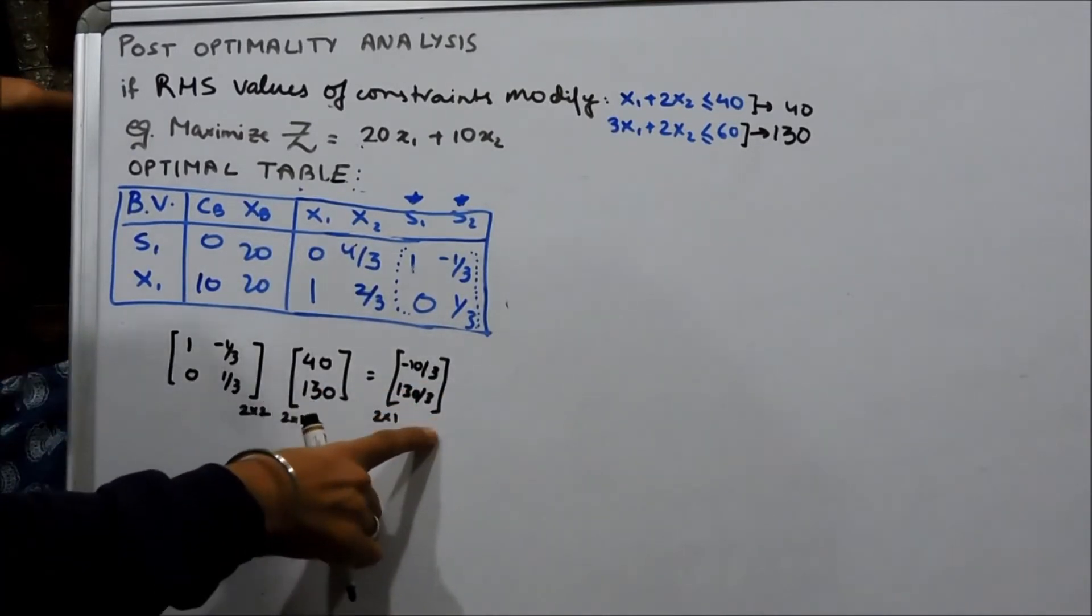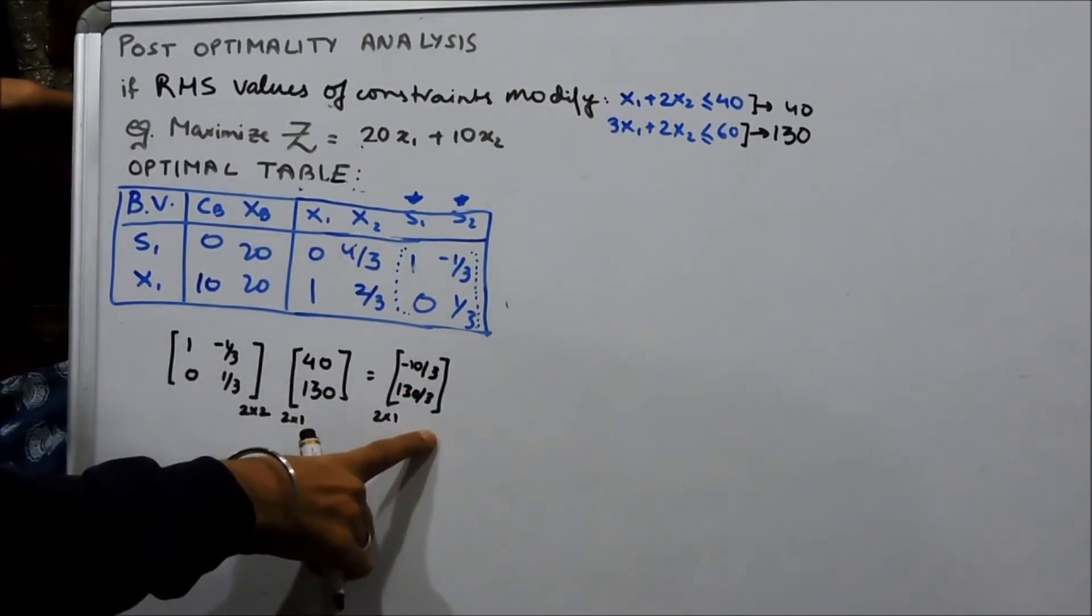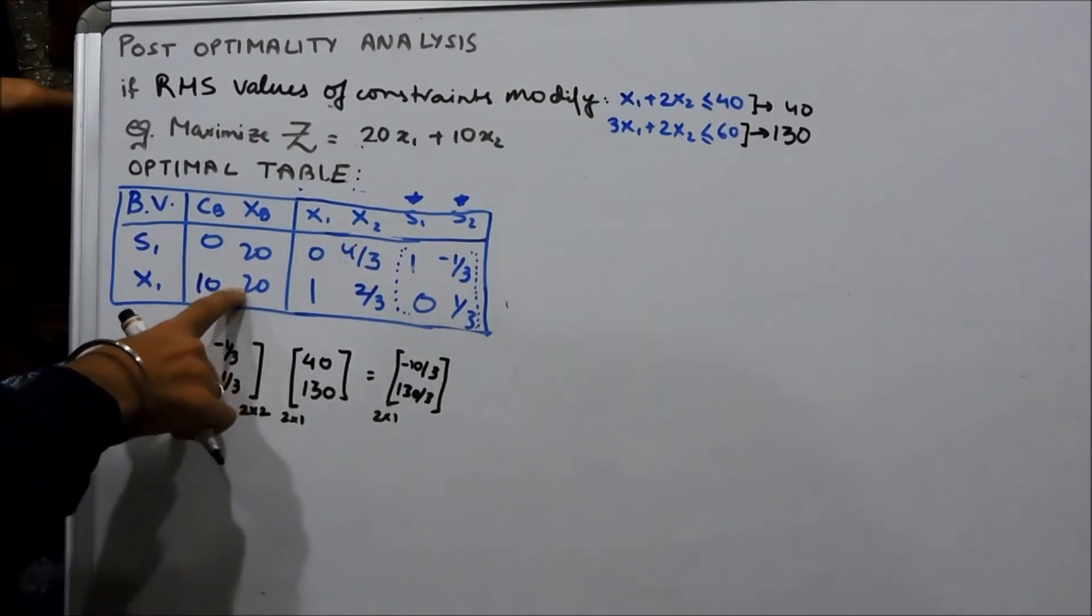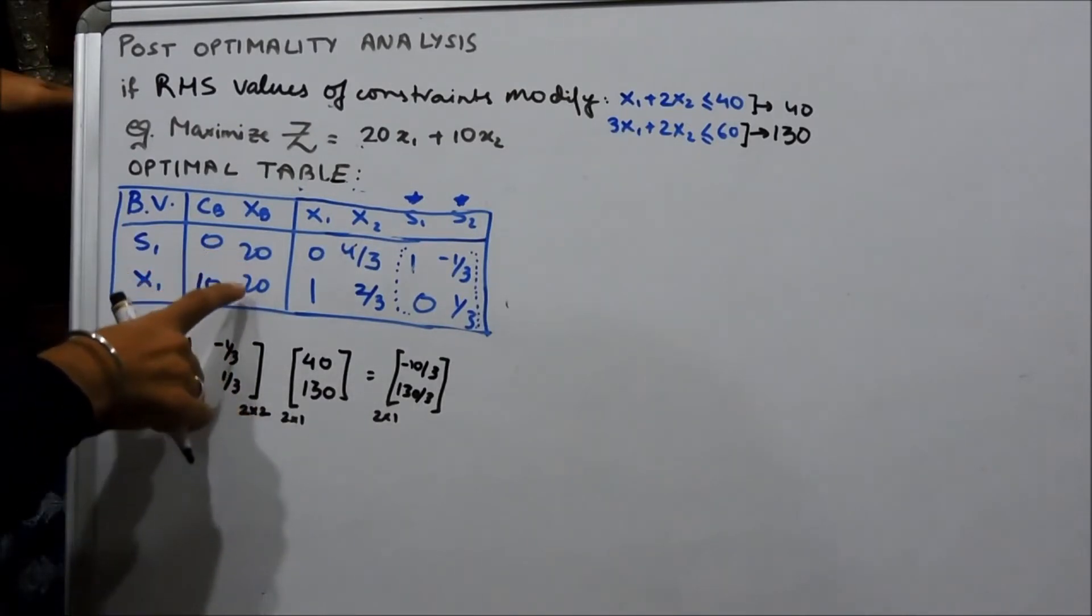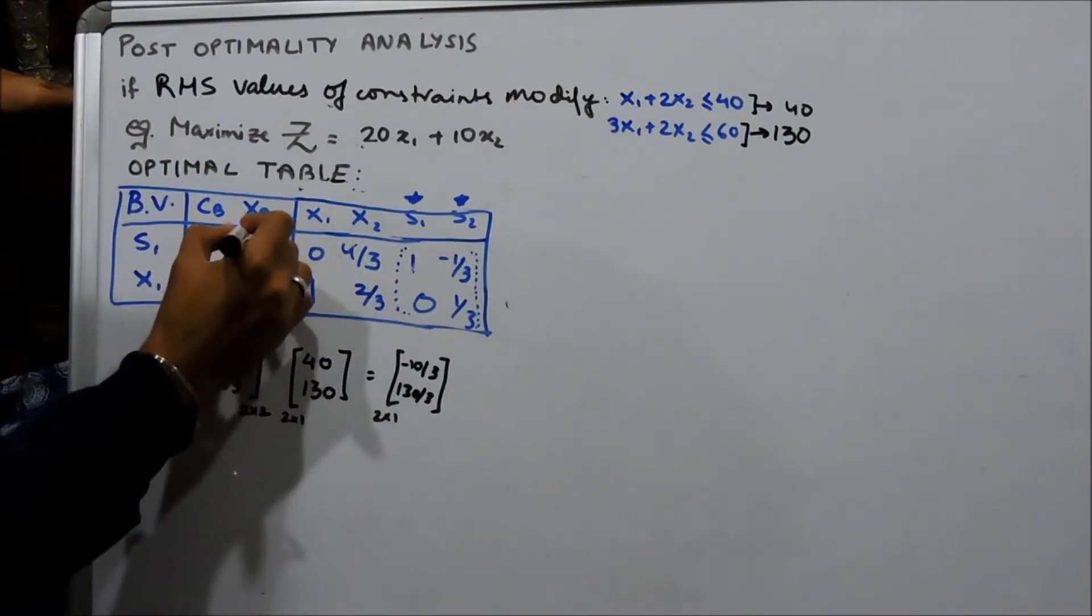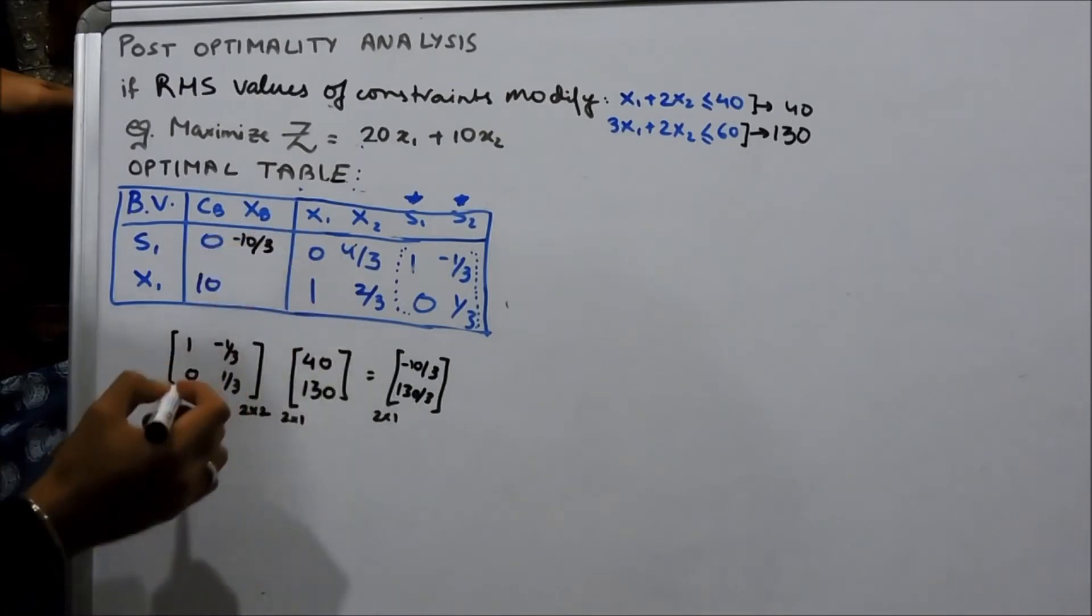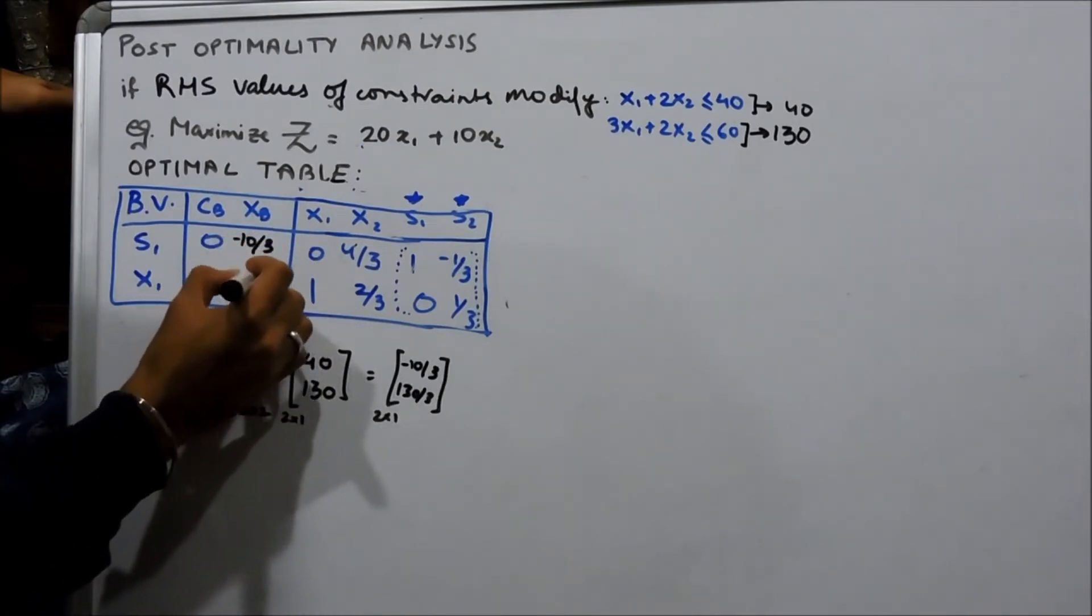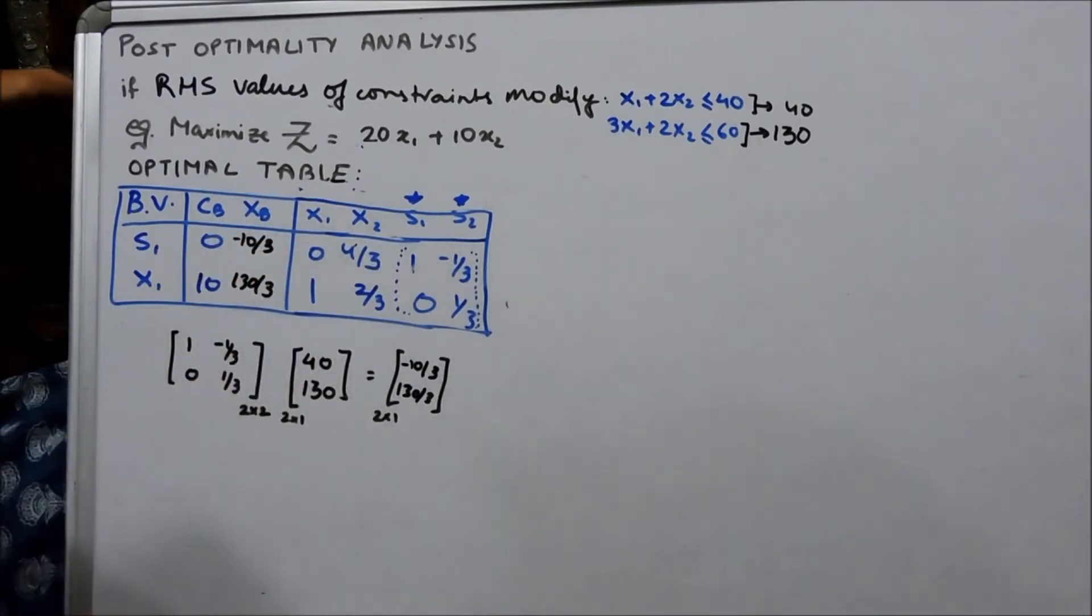So, what happens is, this vector now gets substituted in your new XB values which was 20 and 20 earlier. We change that, minus 10 by 3, 130 by 3.